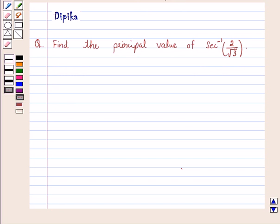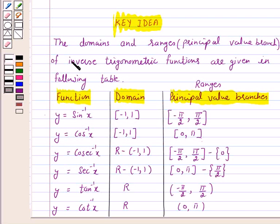Now just look at the table. This table shows the domains and ranges of inverse trigonometric functions. So from this table, the range of the principal value branch of secant inverse is the closed interval 0 to pi excluding pi by 2.